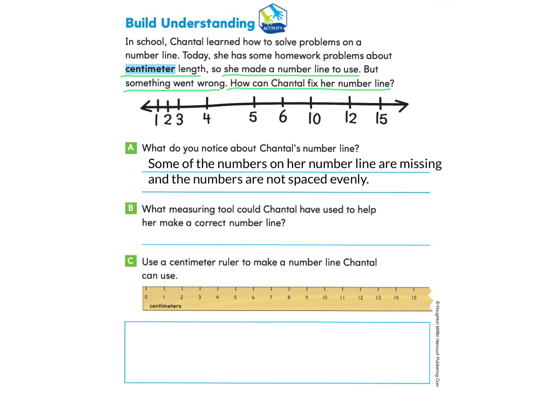And she was counting 1, 2, 3, 4, 5, 6, 10. And the other thing I noticed is that the numbers are not evenly spaced. Here we have something kind of close. And then we have a big space here and another big space and another space. They're just not all the same.